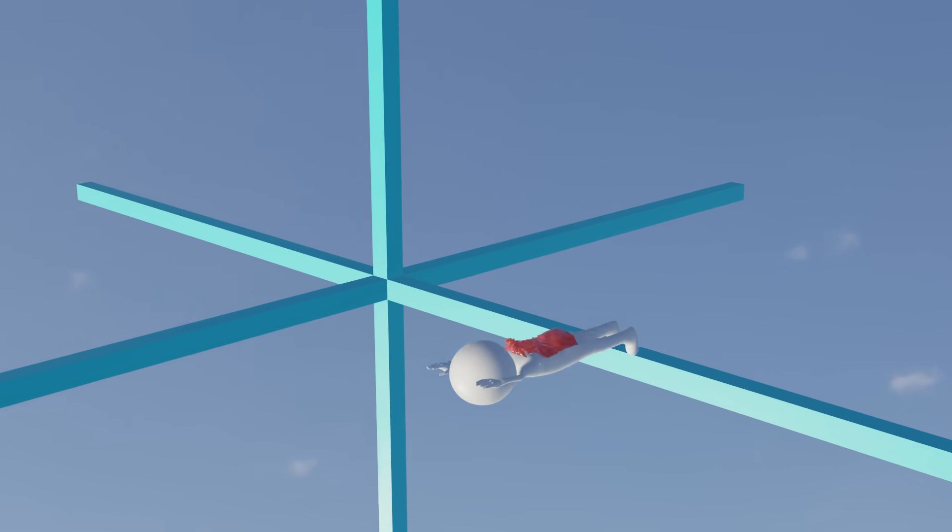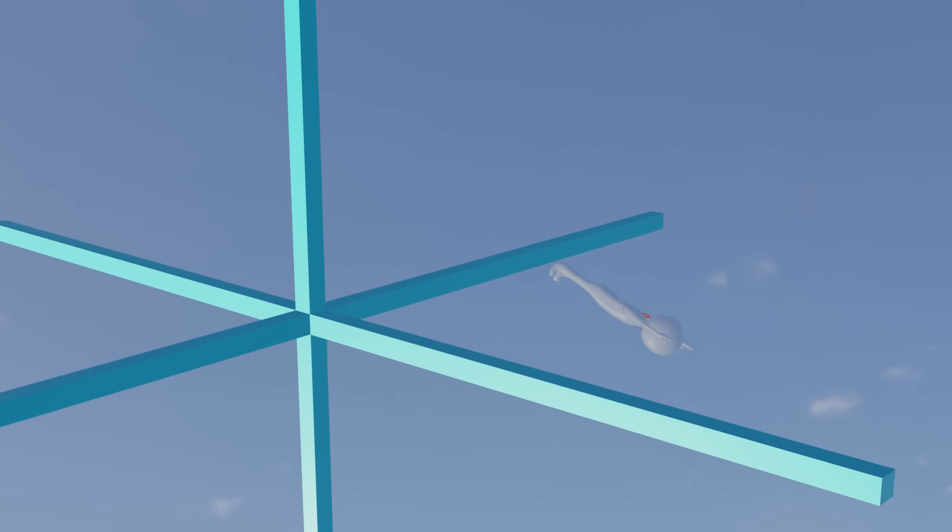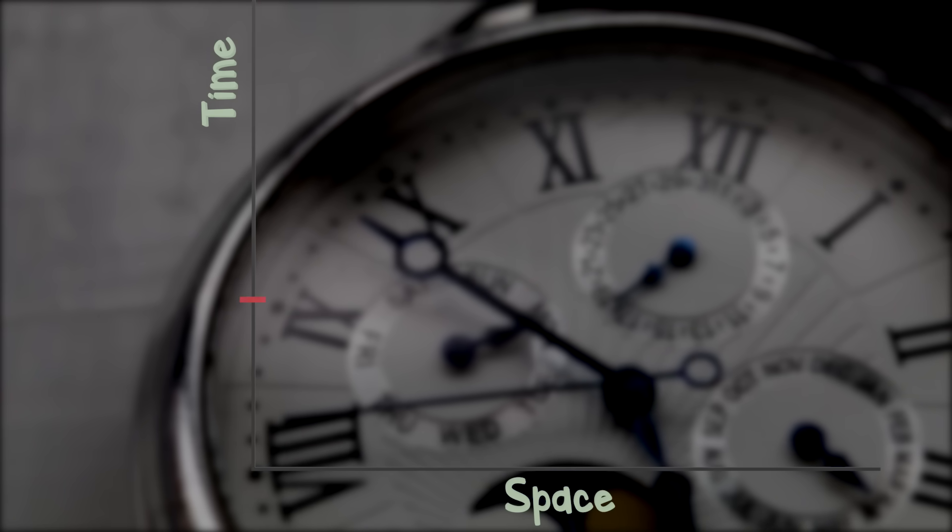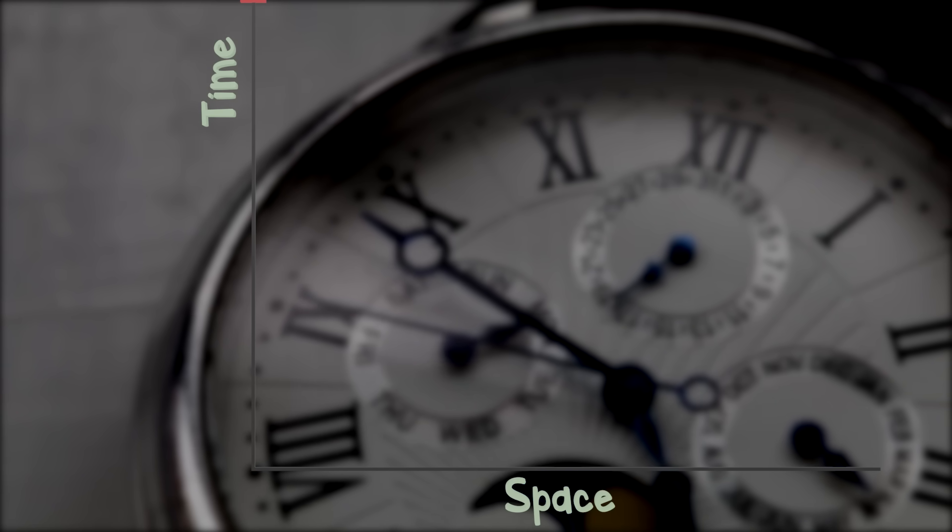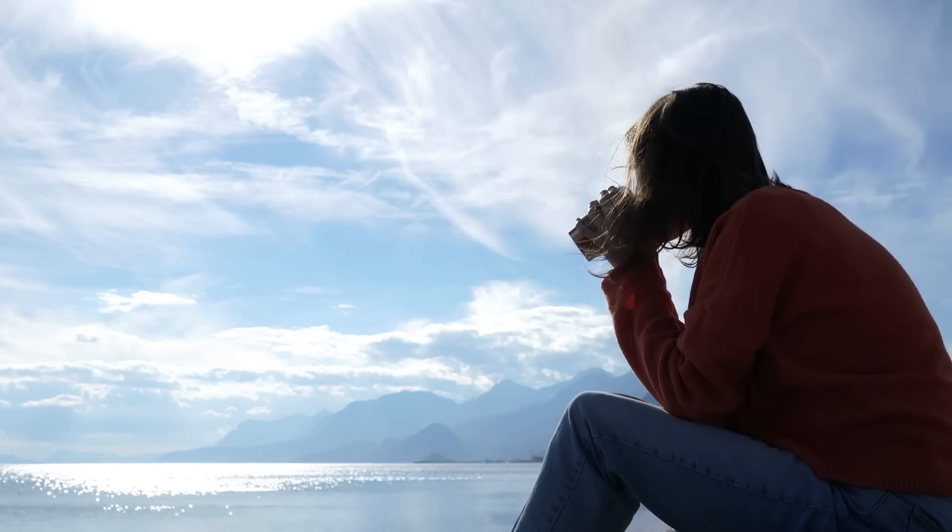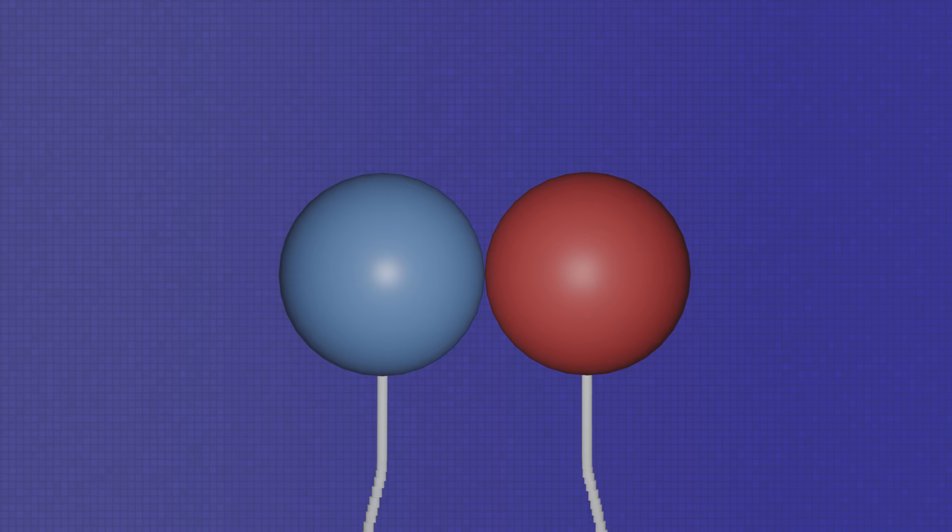This means I can move in any direction within space at any speed or any acceleration. My only constraint is the energy needed to change my momentum. But in the fourth dimension, time, I can only go one direction at one speed. For that reason, we are considered three-dimensional beings. We don't possess the ability to comprehend the fourth dimension. But that doesn't mean it doesn't exist, and believe it or not, it's why things are attracted to each other by what we call gravity.